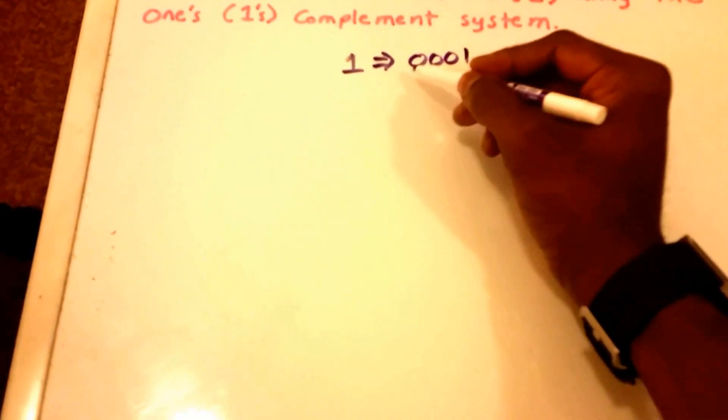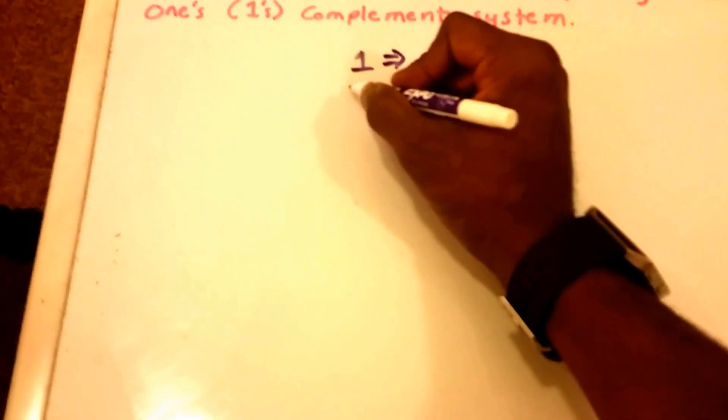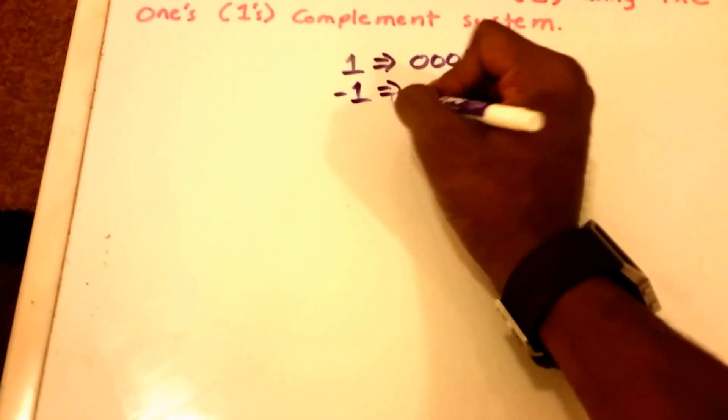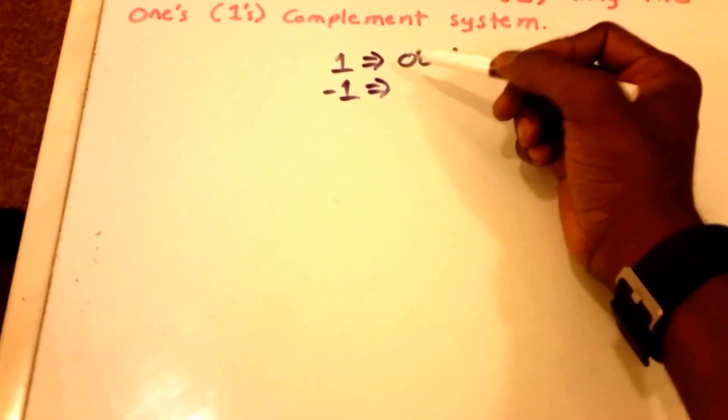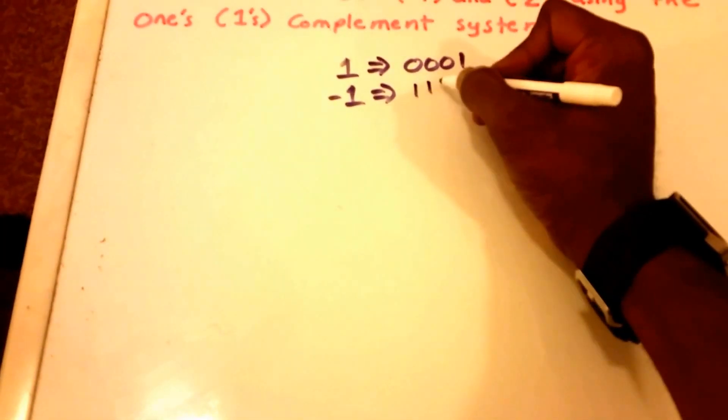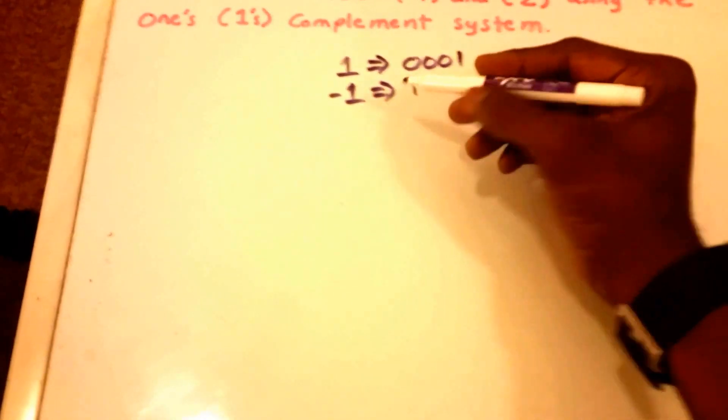I'm going to use four bits here. So negative one in the one's complement system will just be the one but inverted, the bits inverted, so it's gonna be 1110. And then of course two in the one's complement is 0010.